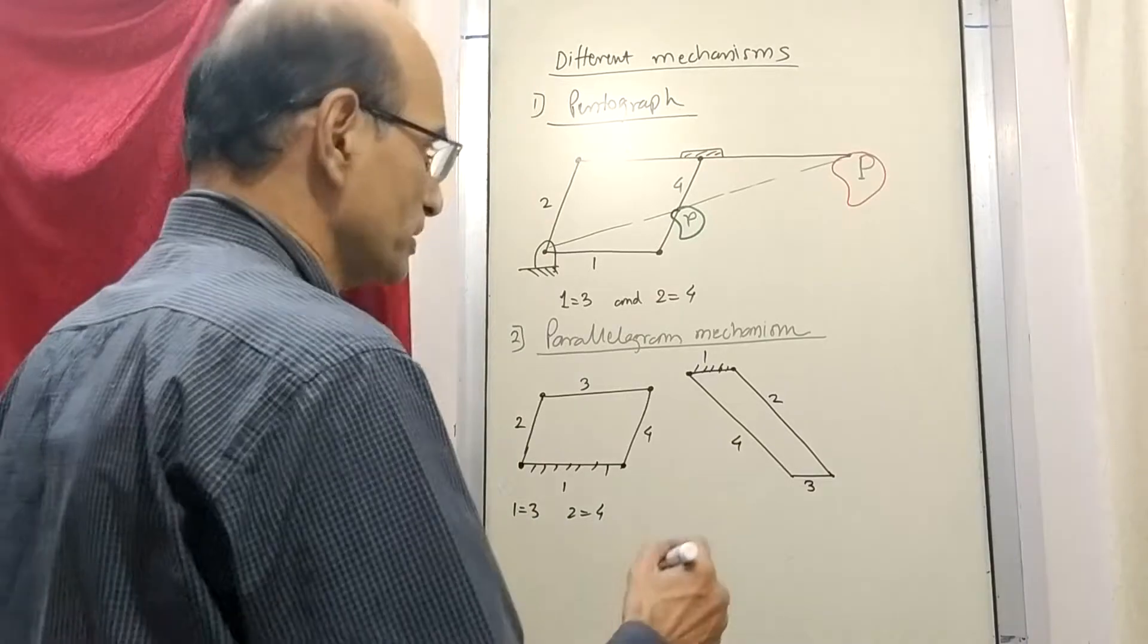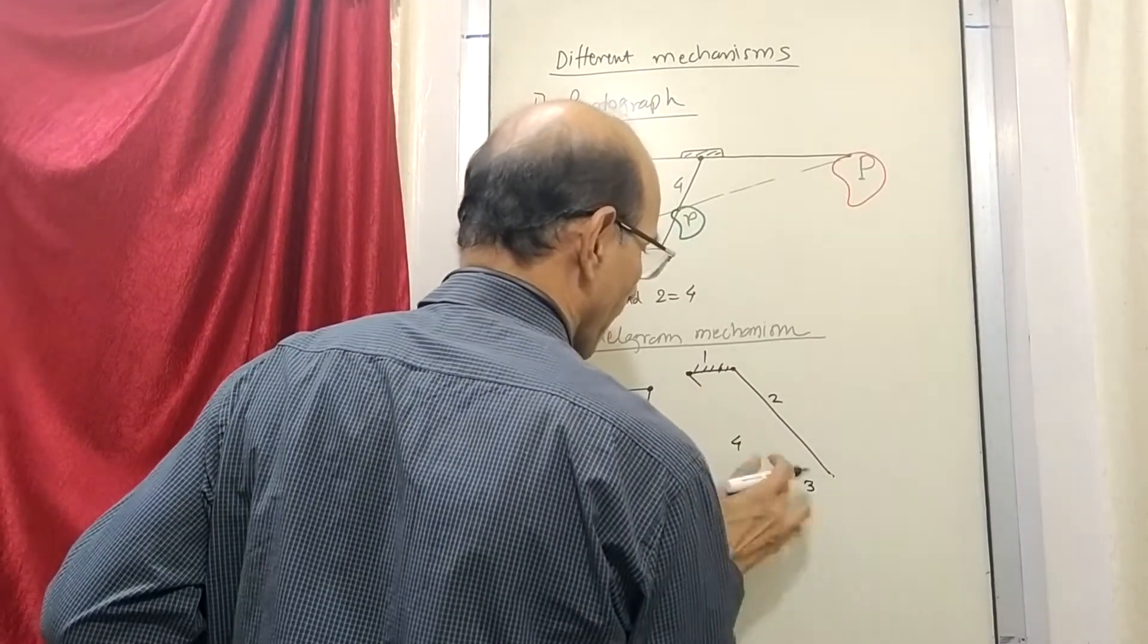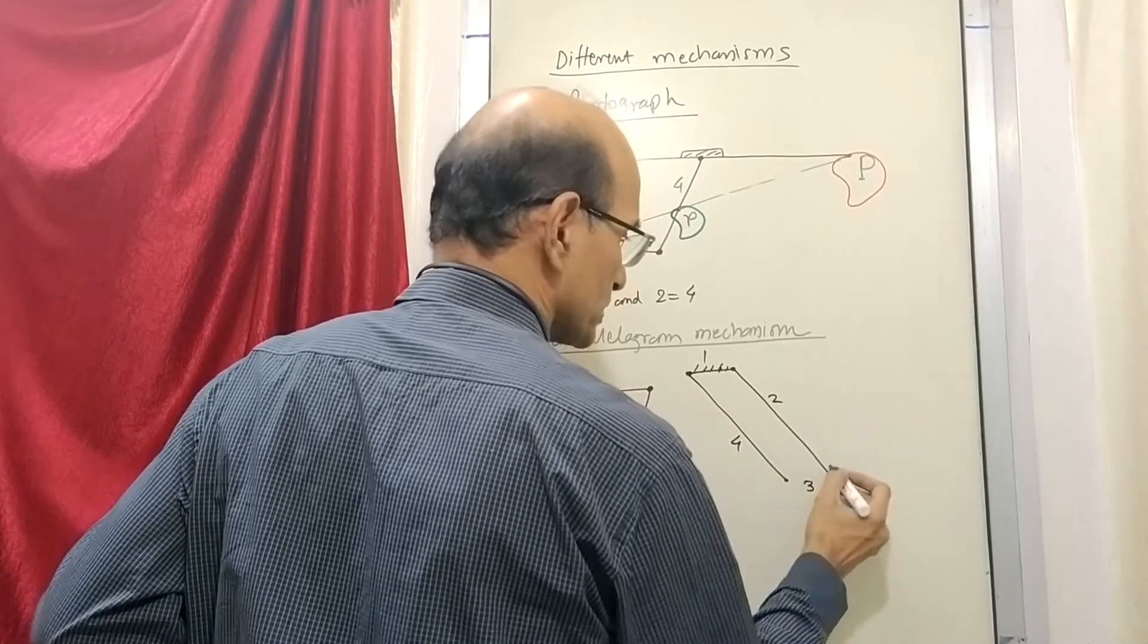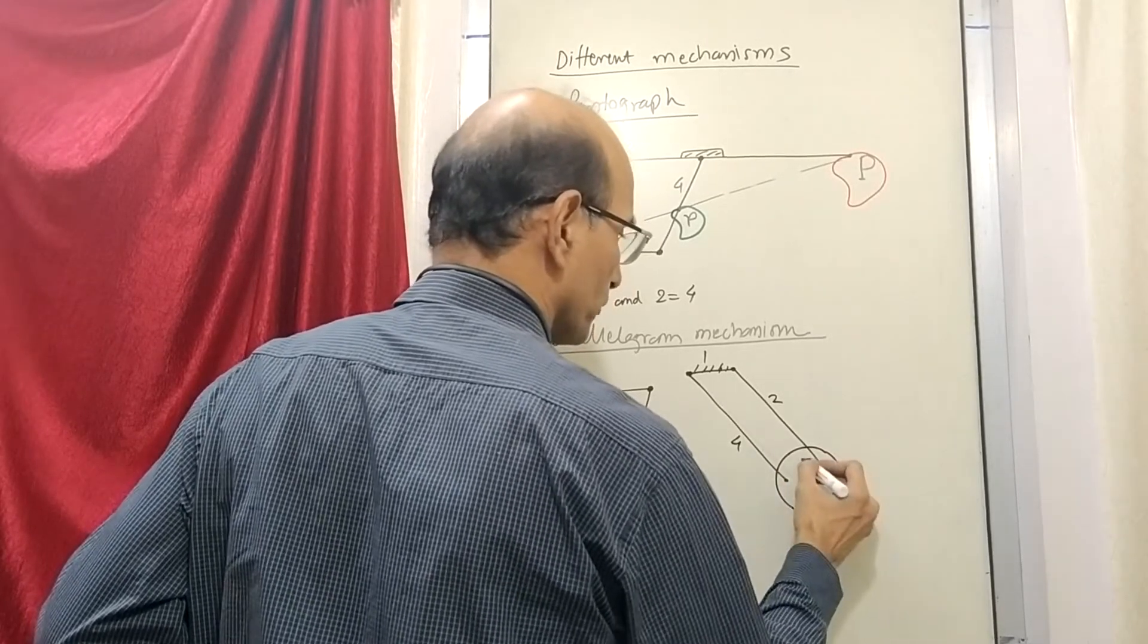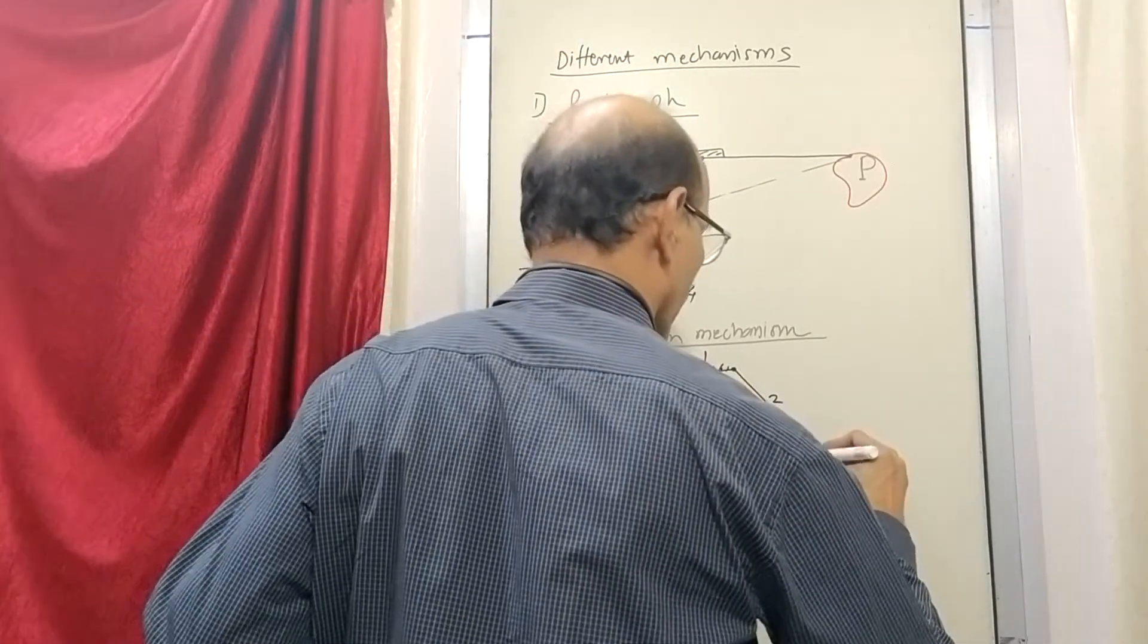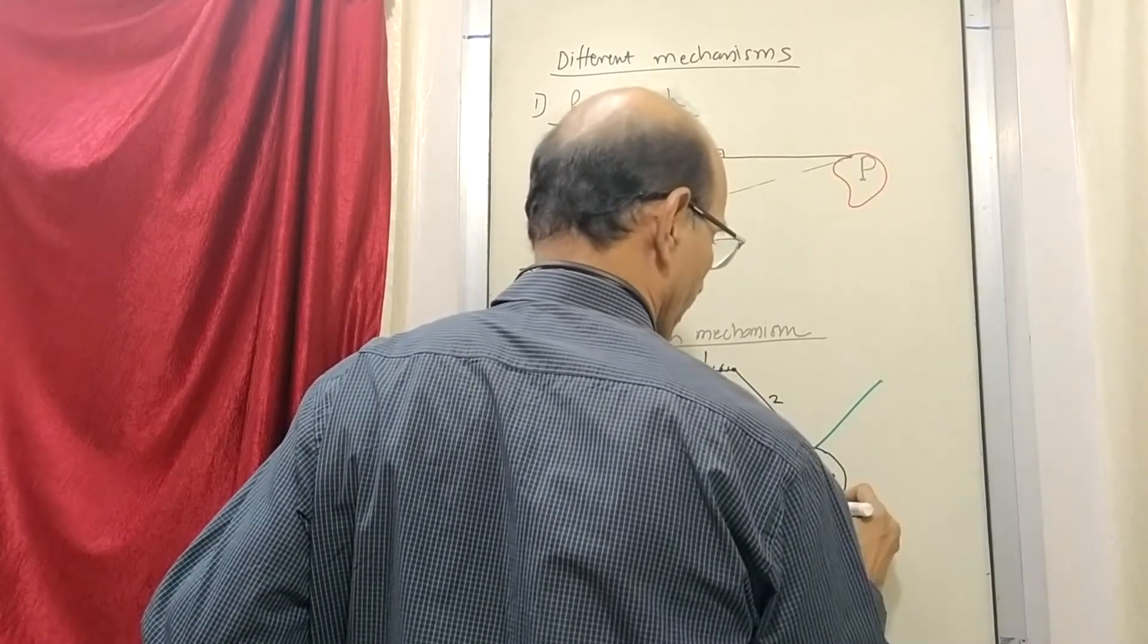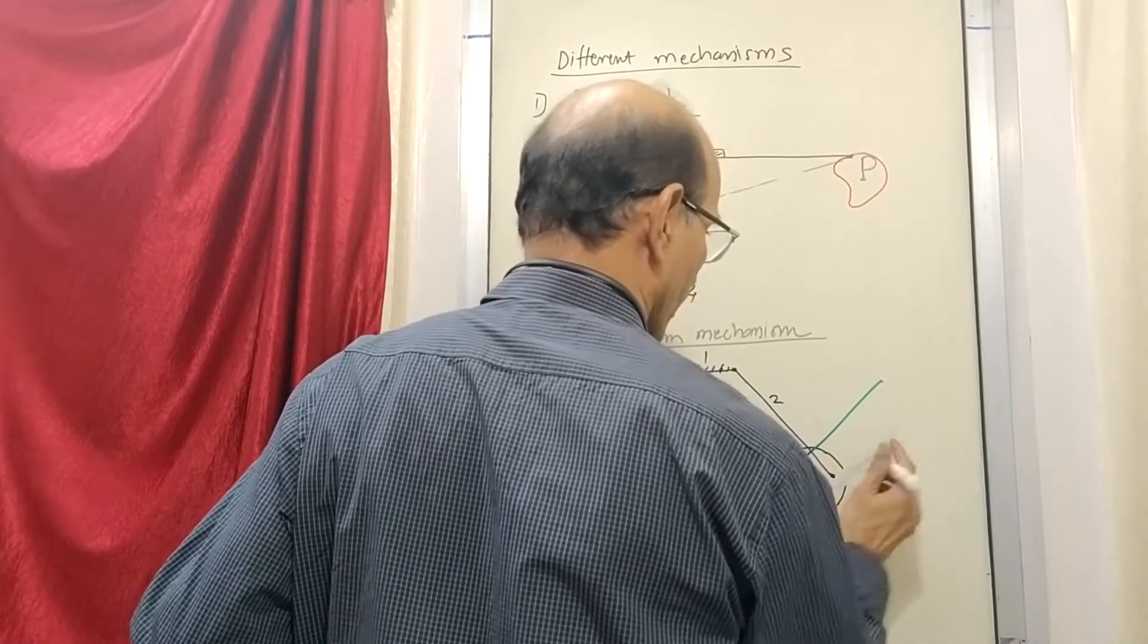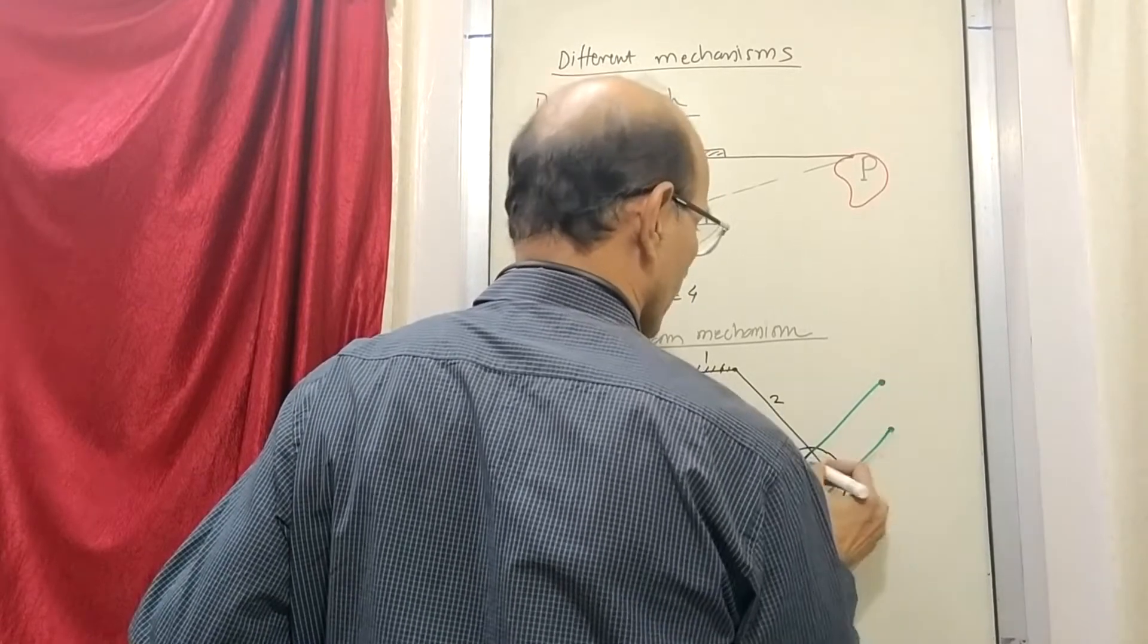Then what they do is they modify this link number three and this is converted into a disk. This three is converted into a disk. So that you can fit two more links.